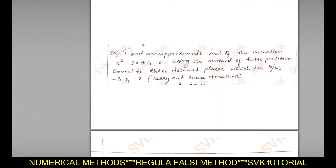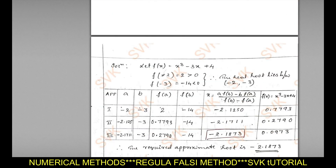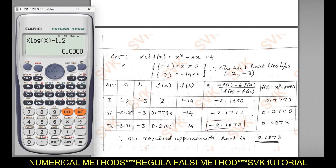Moving to the next problem: find an approximate root of x³ − 3x + 4 = 0 using the method of false position, correct to three decimal places, for the root lying between −3 and −2, carrying out three iterations. Since the values are already given, find f(−2) = 2 and f(−3) = −14 — opposite signs confirm the real root lies between −2 and −3.